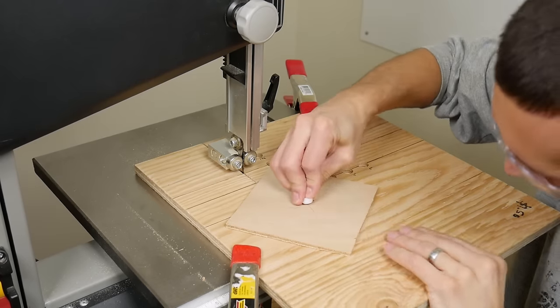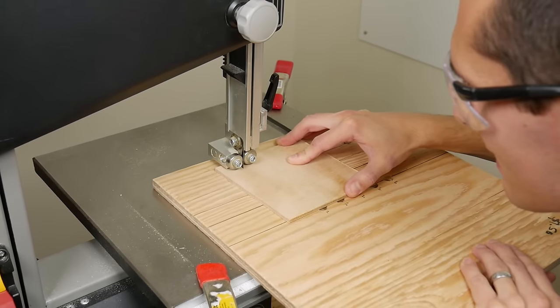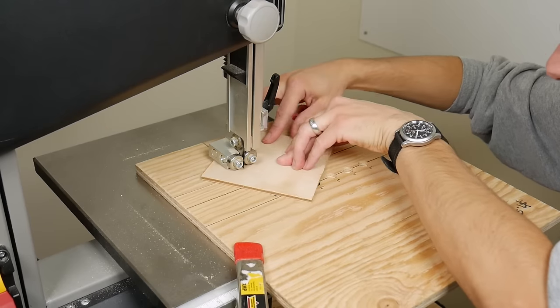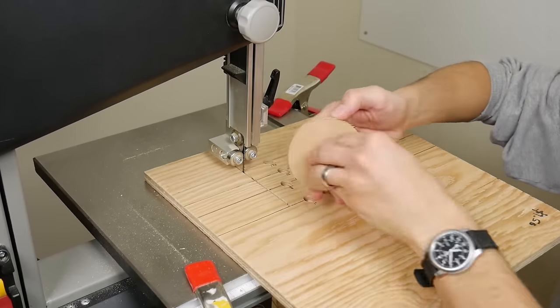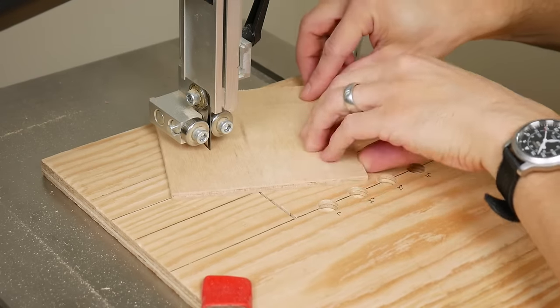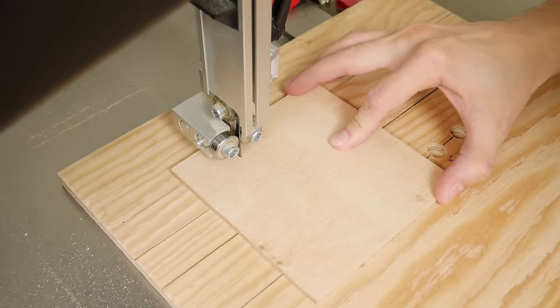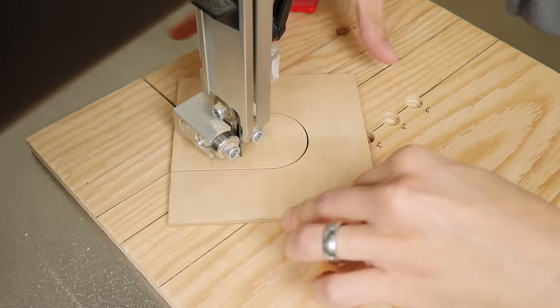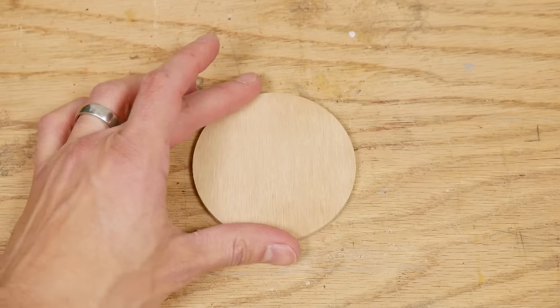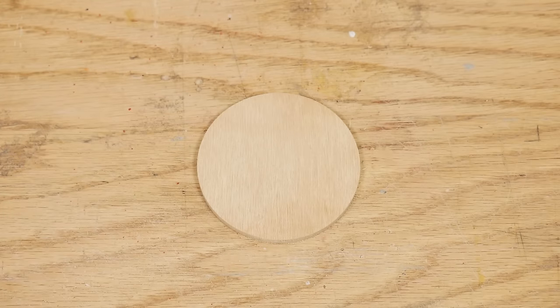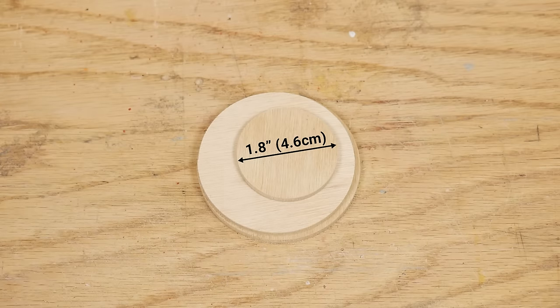Then I used my homemade circle cutting jig to cut three circles. One was three inches in diameter, one was 2.8 inches in diameter, and one was 1.8 inches in diameter.